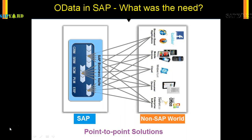That was a surprise for a SAP developer like me. In fact, Citrix, IBM, Microsoft, Progress Software, SAP, and WSO2 were the companies which collaborated together to standardize OData for the implementation of RESTful services. Everyone came together, gave their input, and finally managed to develop OData, which is now universally used. Today, OData is managed by an organization called OASIS.